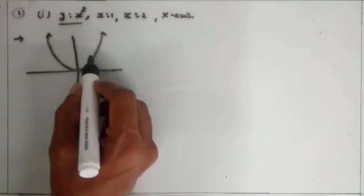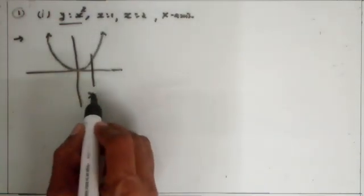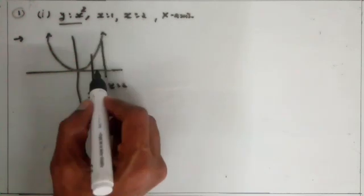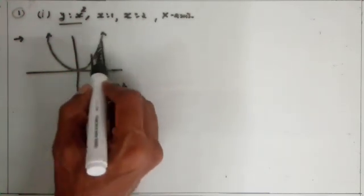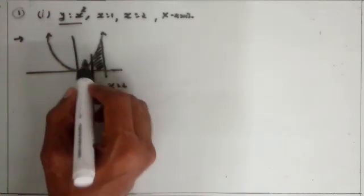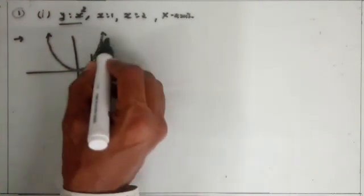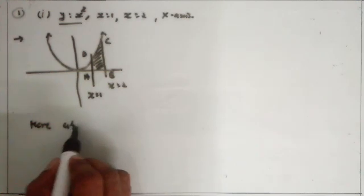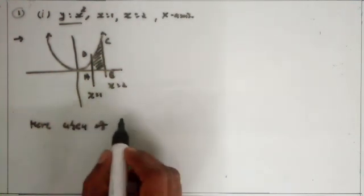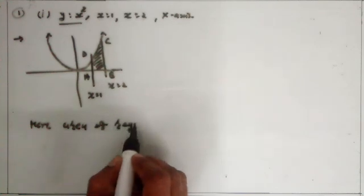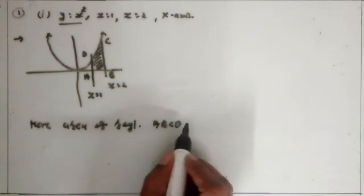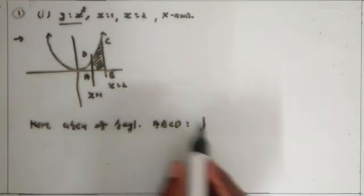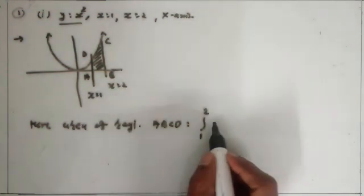Now lines x is equal to 1 and x is equal to 2 are given. And we want to find the area of this region A, B, C, D. Area of region ABCD is equal to — we know the formula — the integral with limit 1 to 2 of y dx.